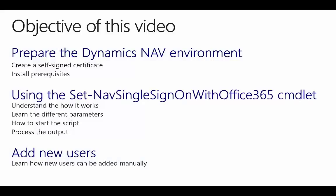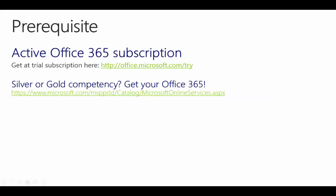At the end of this video we will have a Microsoft Dynamics NAV 2015 environment that is completely configured to use Office 365 Single Sign-On. The objectives are: first, to know how to prepare the Dynamics NAV environment before the PowerShell script can run; next, to know how the commandlet should be used, what it exactly does, how it can be started and what the output is; and finally, how to manually add more Office 365 users to Microsoft Dynamics NAV.